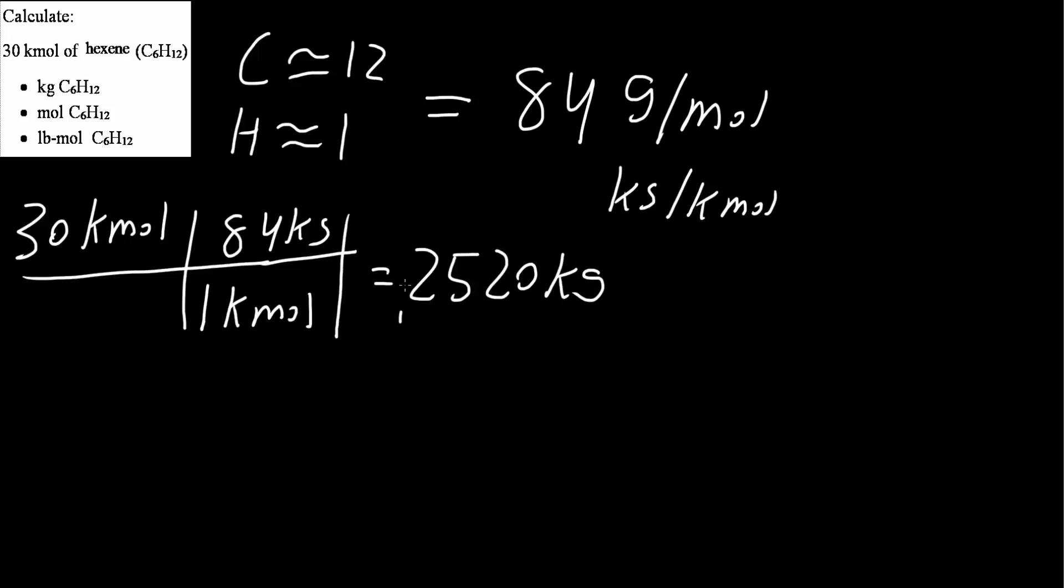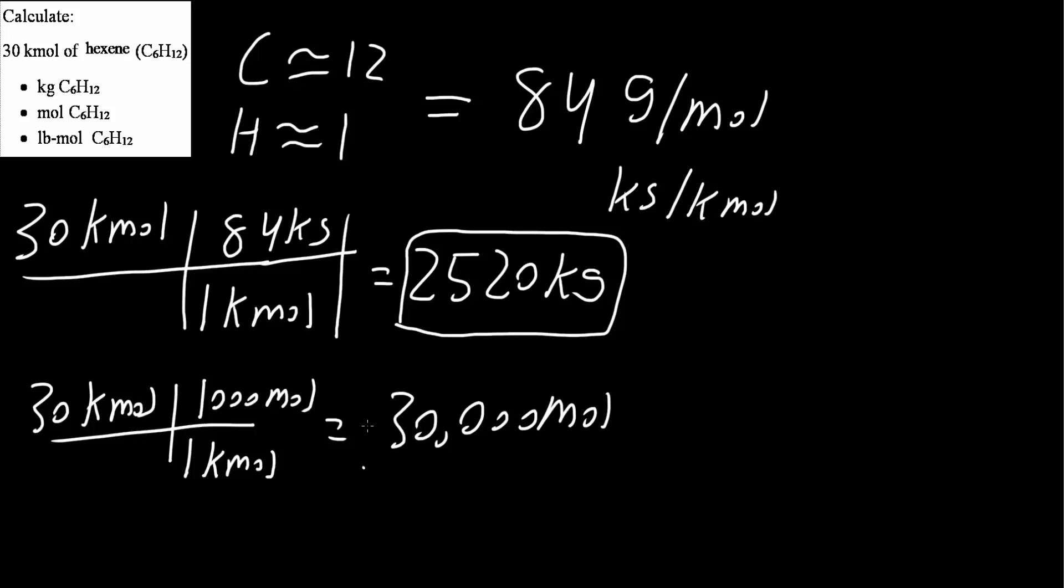So this is the first problem, and now we'll do the second one. So we want to convert to moles. So we are given 30 kilomoles, and we know that 1 kilomole is 1,000 moles. So we just simply multiply 30 times 1,000, and we get 30,000 moles. So that's the second problem.